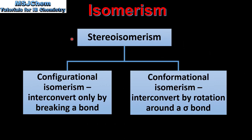Stereoisomerism can be divided into two types: configurational isomerism and conformational isomerism. Conformational isomers interconvert by rotation around a sigma bond. For example, these can occur in the alkanes, which have carbon-to-carbon single bonds.